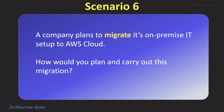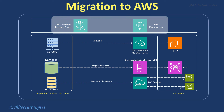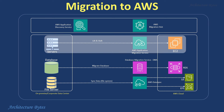A company plans to migrate its on-premise IT setup to AWS Cloud. How would you plan and carry out this migration? AWS provides several migration services to help migrate workloads from an on-premise data center or other cloud providers to AWS. The Application Discovery Service helps collect information about servers and processes in the on-premise data center. The Migration Hub tracks and manages the overall migration process. For a lift-and-shift migration of on-premise servers to EC2, AWS Application Migration Service may be used.